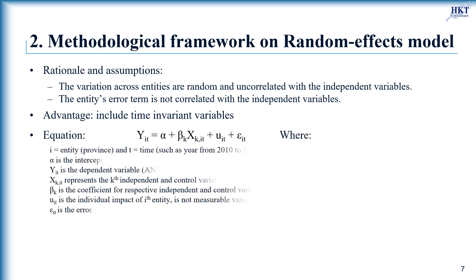In random effects, we need to specify those individual characteristics that may or may not influence the independent variables. The problem with this is that some variables may not be available therefore leading to omitted variable bias in the model. The equation for the random effects model becomes as here.